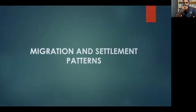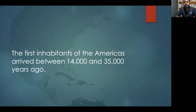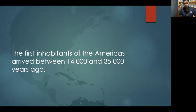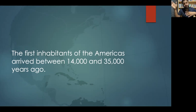Now that we have a good idea of what we mean by the Caribbean region, we want to look at the migration and settlement patterns of the indigenous peoples who first came to the Caribbean. The first inhabitants of the Americas arrived between 14,000 and 35,000 years ago. When we say the Americas, we mean North America, Central America, South America, and of course the Caribbean. This date range is still a point of debate, but it is safe to say around 20,000 years ago the first inhabitants arrived.